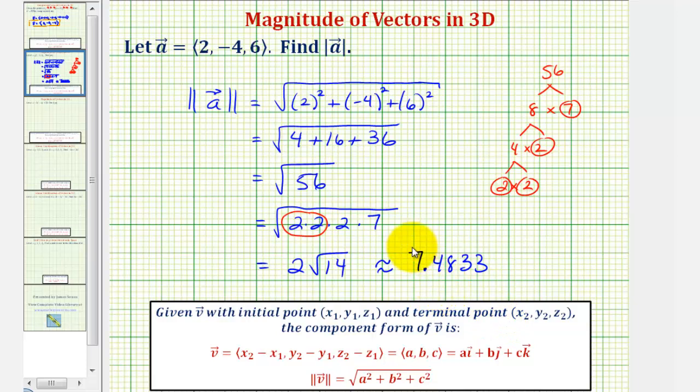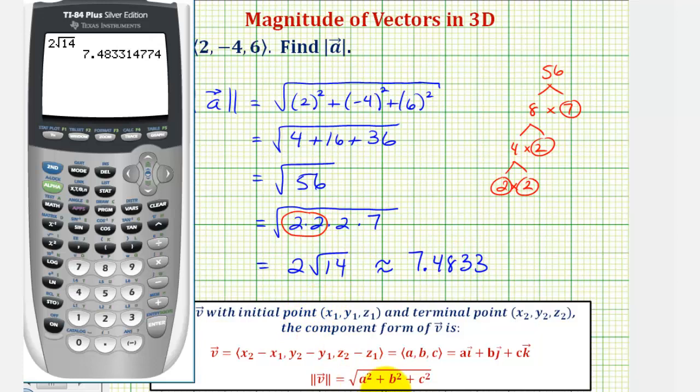We can also check to make sure we simplified this correctly by using the calculator to make sure the square root of 56 also gives us the same decimal approximation. Let's go ahead and do that as well. So √56 does give us the same decimal approximation.